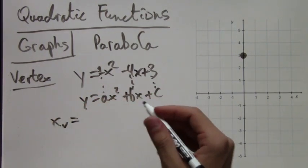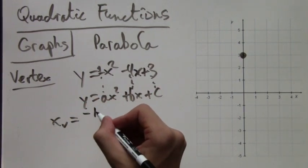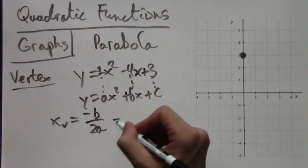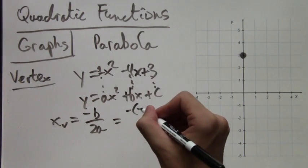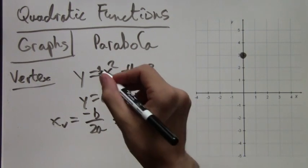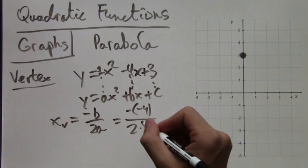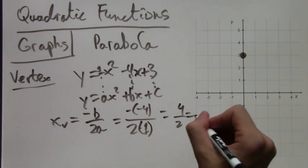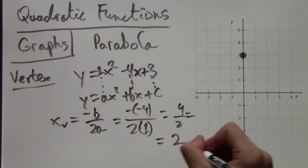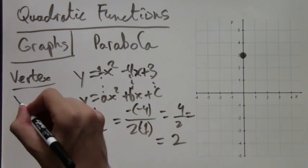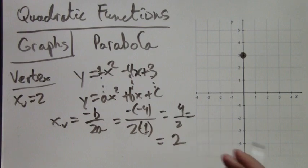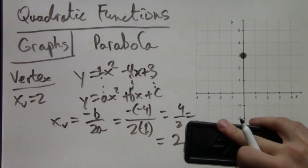The formula is negative b over 2a, where b in this case is negative 4, as I've shown with the little dotted lines, and a is 1. So we get 4 over 2, which is 2. Now we know the x-coordinate of the vertex, and we just plug it in to find the y-coordinate.